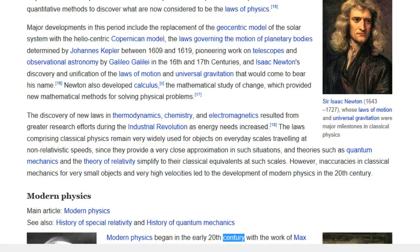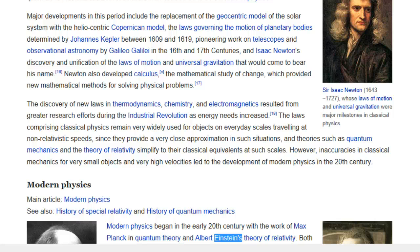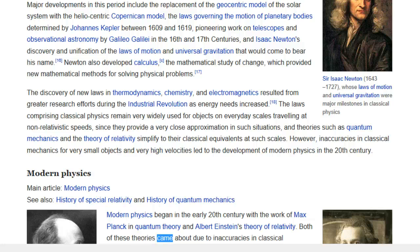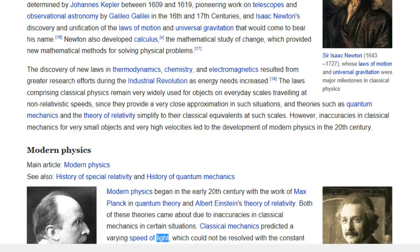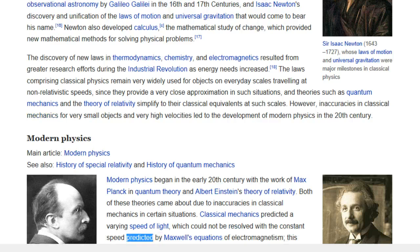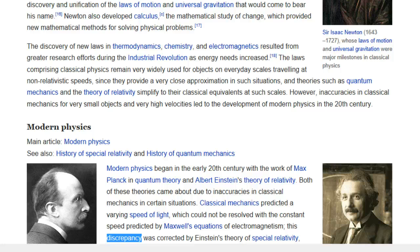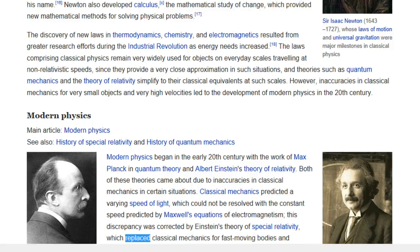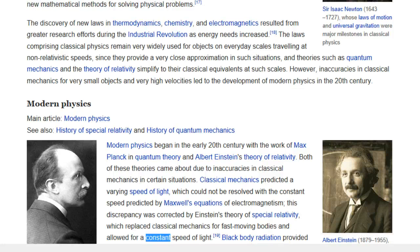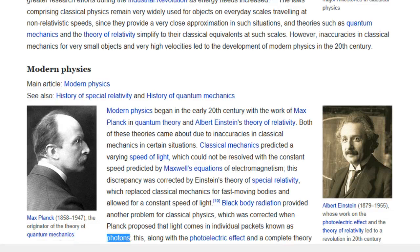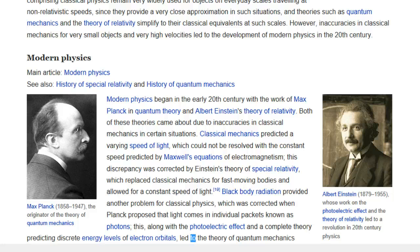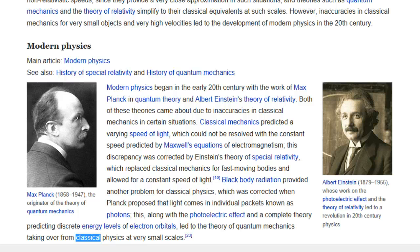Modern Physics began in the early 20th century with the work of Max Planck in quantum theory and Albert Einstein's theory of relativity. Both of these theories came about due to inaccuracies in classical mechanics in certain situations. Classical mechanics predicted a varying speed of light, which could not be resolved with the constant speed predicted by Maxwell's equations of electromagnetism. This discrepancy was corrected by Einstein's theory of special relativity, which replaced classical mechanics for fast-moving bodies and allowed for a constant speed of light. Black body radiation provided another problem for classical physics, which was corrected when Planck proposed that light comes in individual packets known as photons. This, along with the photoelectric effect and a complete theory predicting discrete energy levels of electron orbitals, led to the theory of quantum mechanics taking over from classical physics at very small scales.